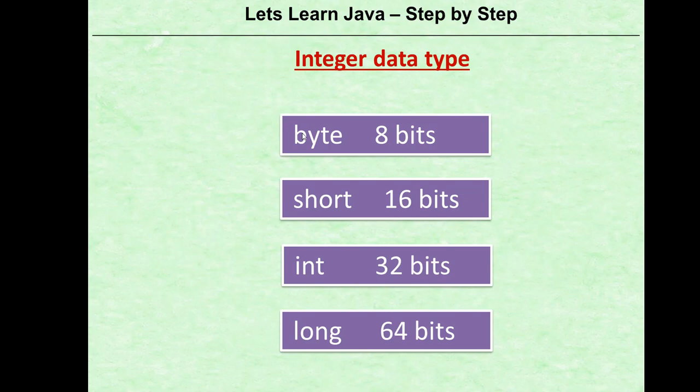This is where Java differs from C, where variable size depends on the chipset and the platform. In Java, variables are designed to be consistent across platforms. So byte will be 8 bits irrespective of where you use it, short is 16, int is 32, and long is 64. There is consistency in the size of the variable irrespective of the platform you use them on.